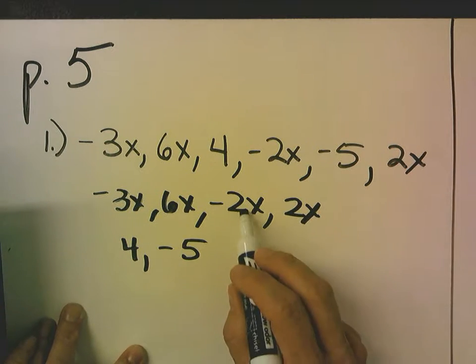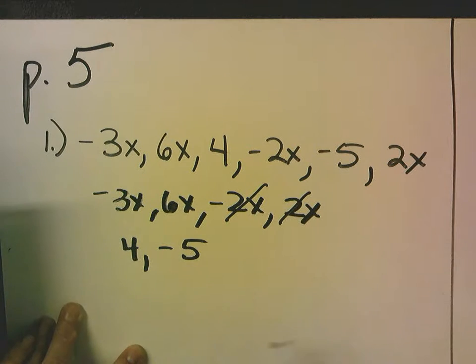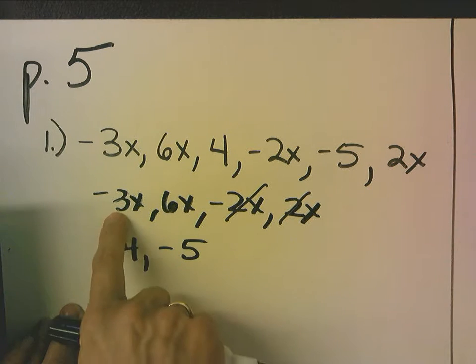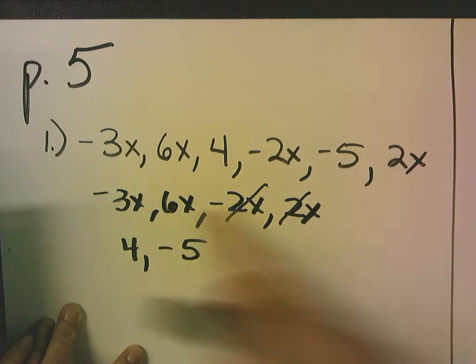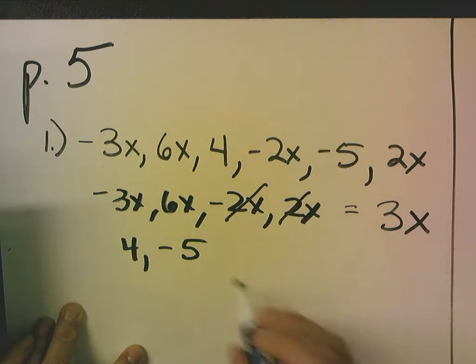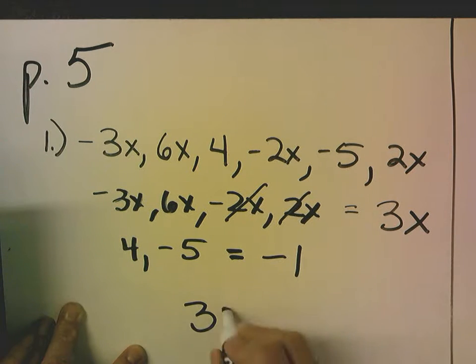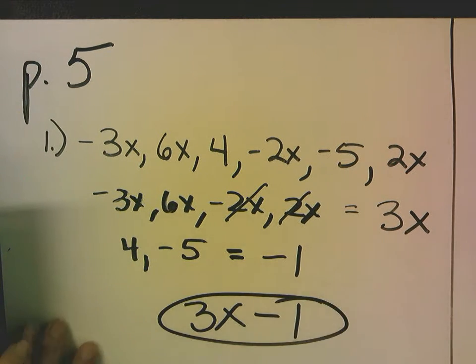Negative 2x and positive 2x zero each other out, so now I just need to combine 6x and negative 3x. The positives are going to win that tug of war by 3, so I get 3x here. And now 4 and negative 5, the negatives are going to win by 1. So this becomes 3x minus 1.